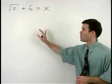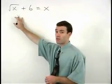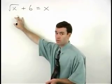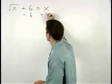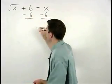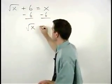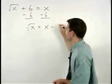We start this problem by isolating the radical on the left side of the equation. So subtracting six from both sides we have the square root of x equals x minus six.